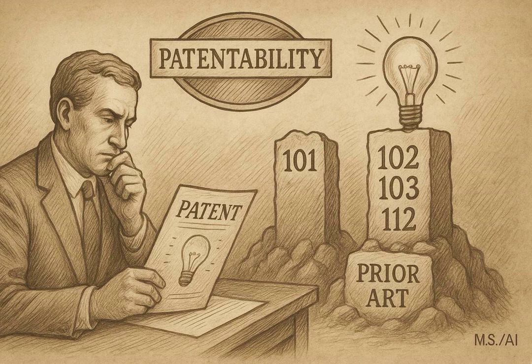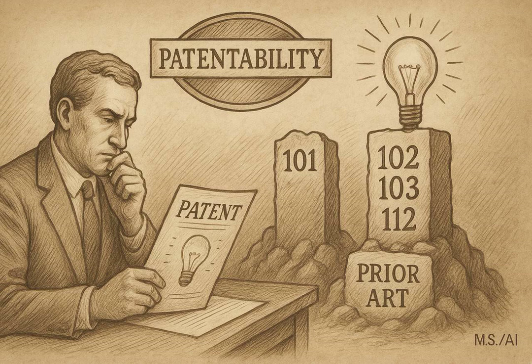Section 103, non-obviousness, involves more judgment. An invention can be technically new — maybe no single prior art reference shows everything — but still not patentable if it's considered obvious to a person having ordinary skill in the art, or PHOSITA. Examiners imagine someone with typical knowledge and skill in that specific field at the time the invention was made, and ask if that person would have found the invention obvious. They look at the differences between your invention and the prior art and ask: would it have been obvious for that skilled person to bridge those differences, to combine known elements from different pieces of prior art, to arrive at your invention?